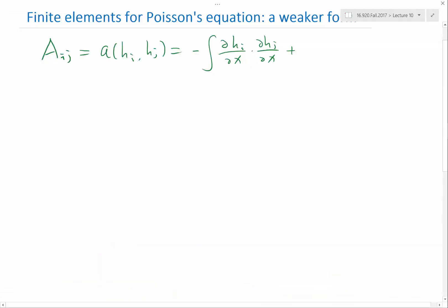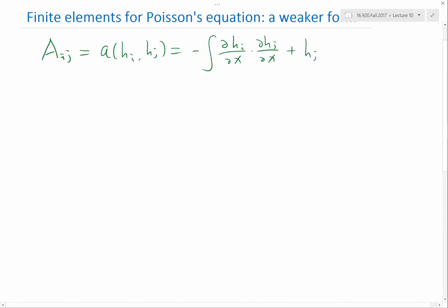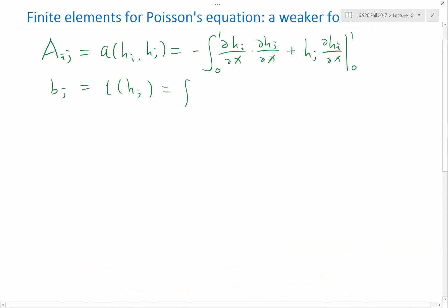In this case, my a is equal to minus integration of the partial g, which is the hi derivative times hj derivative, and plus the second hj times partial hi partial x. So let's imagine we are solving from the interval 0 to 1. So my vj is equal to L of hj, which is equal to g times f, so hj times my right-hand side f.